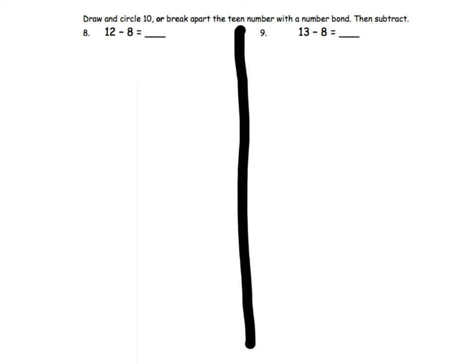In these examples, we will draw and circle 10, or break apart the teen number with a number bond, then subtract. I will demonstrate both methods for each example.